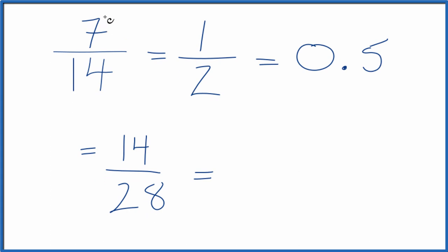Let's multiply by 3. 3 times 7 is 21. 3 times 14 is 42.